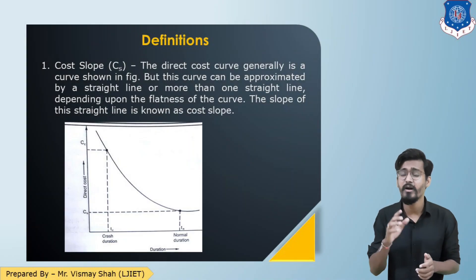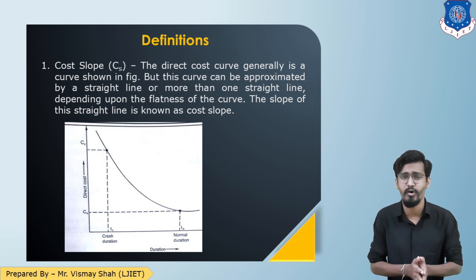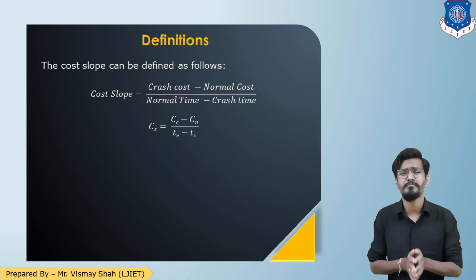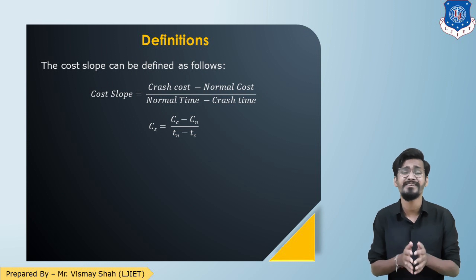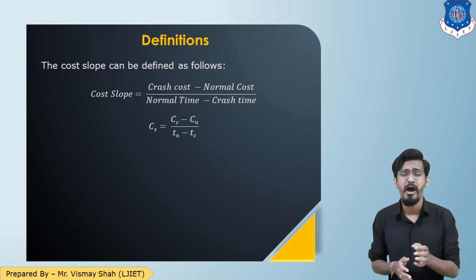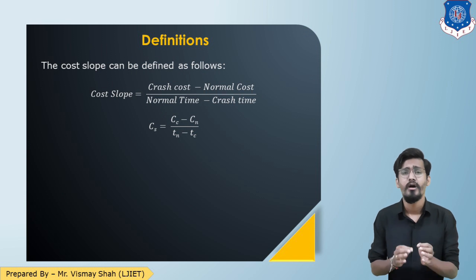This curve has a slope known as the cost slope. The formula for cost slope is: crash cost minus normal cost, divided by normal time minus crash time — that is (CC − CN) / (TN − TC). That is the formula for cost slope.